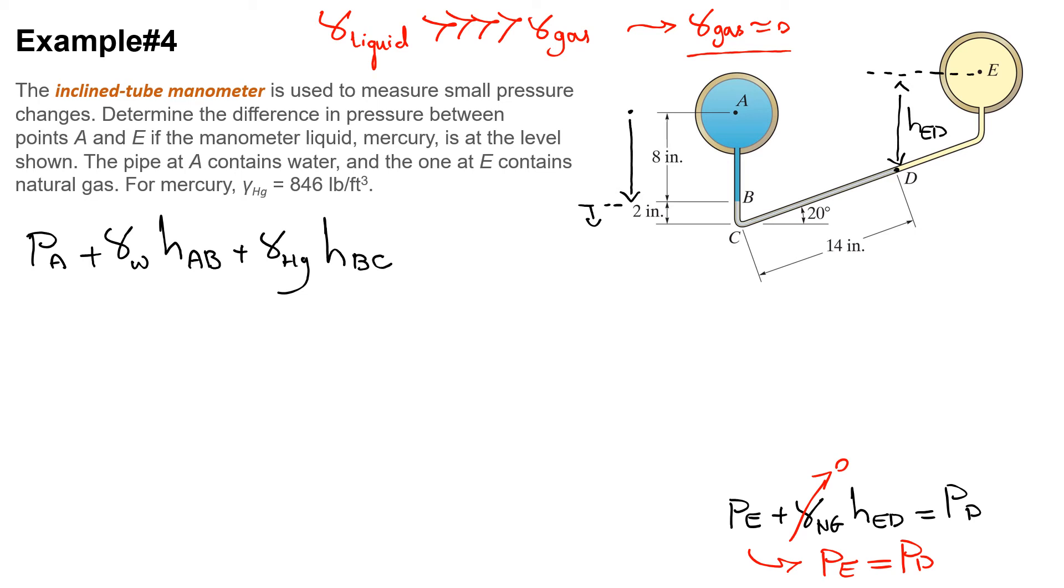Now I need to move up. Make sure that we are not going to consider the inclined distance - we move up in Z direction only, vertical. To calculate the vertical distance from C to D, let's draw this triangle. hCD can be calculated as 14 inches times sine of 20 degrees because we have the slope. So moving up from point C, the sign would be negative, and we are still moving in mercury: minus gamma mercury times hCD.